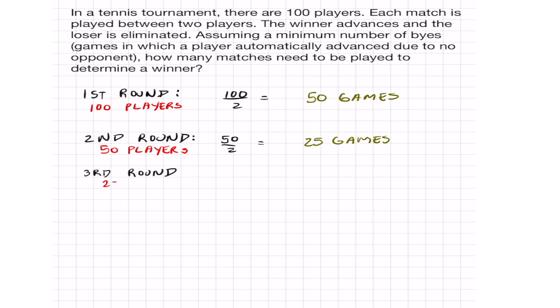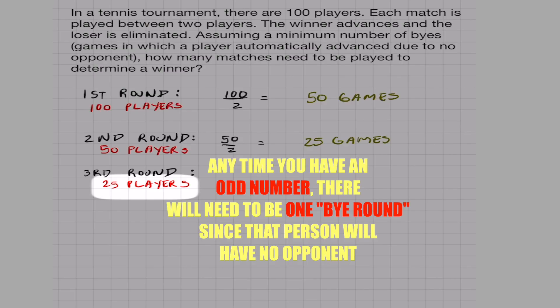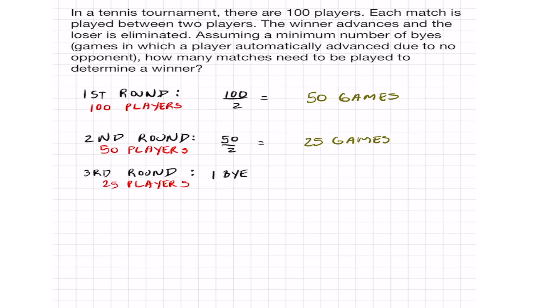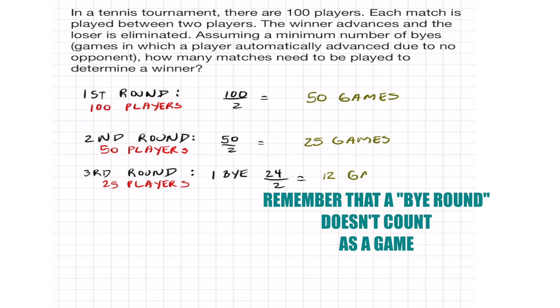In the third round, we got 25 players left. To determine the number of games that need to be played, we need to divide 25 by 2. Thing is, we can't have an odd number in here. One guy is going to have no opponent to play with, so this is the first time we get a bye. This means that we got to take the number 24 and divide that by 2. That means 12 games need to be played in the third round with one bye.